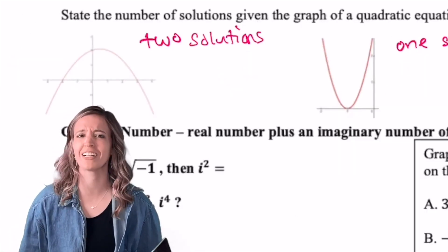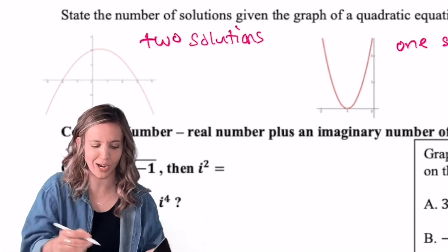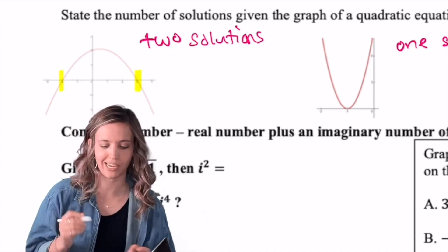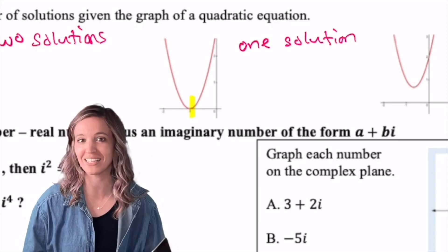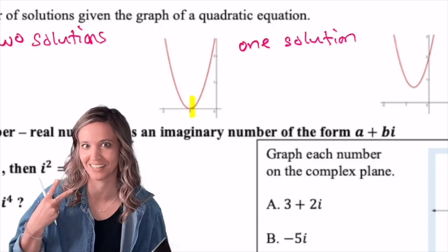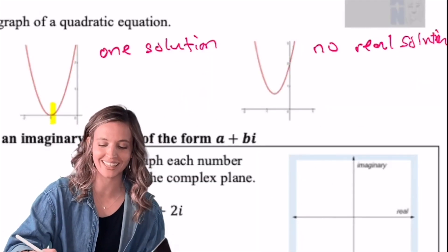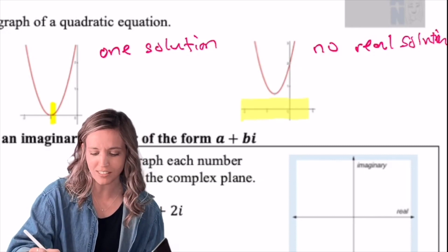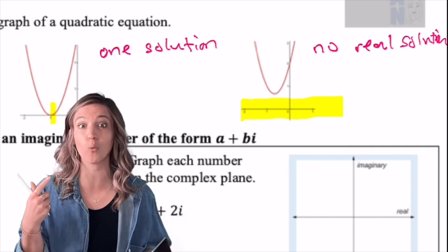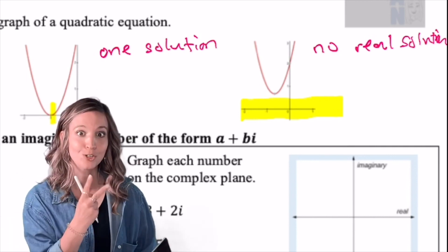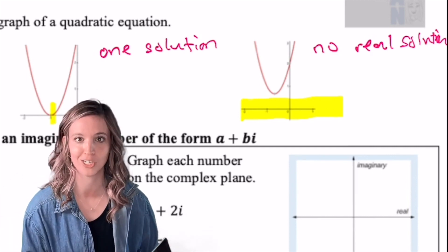So that first graph clearly has two solutions, right? Because I can see these two x-intercepts right here. The second graph has one solution. Now we'll learn that means there's one solution with a multiplicity of two. And then if I look at this last graph here, it never crosses my x-axis. So I mean, no solutions? We say that's no real solutions. So that means it has two imaginary solutions.